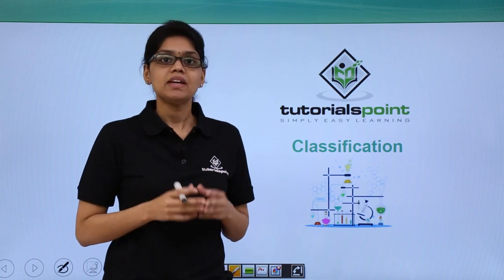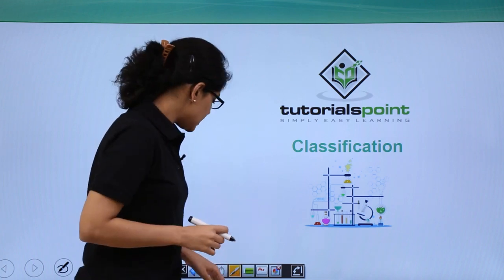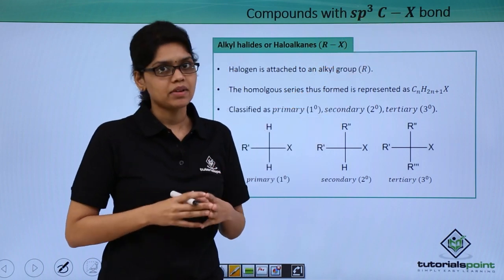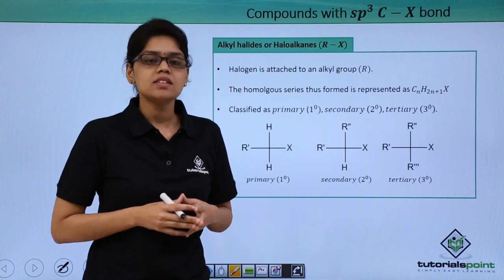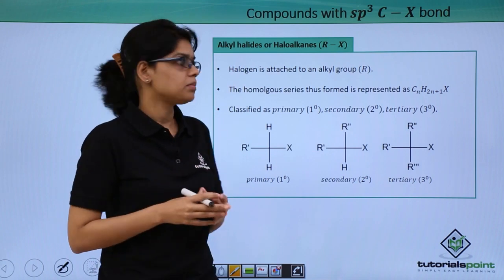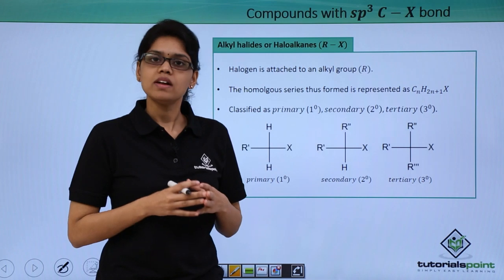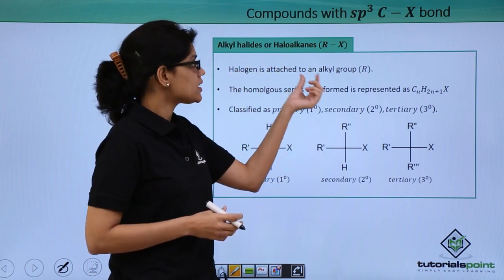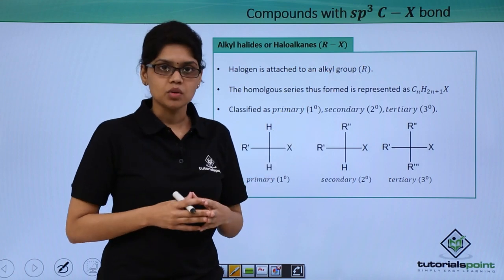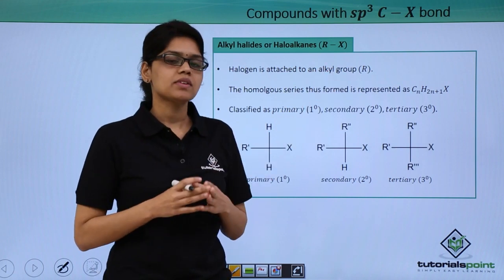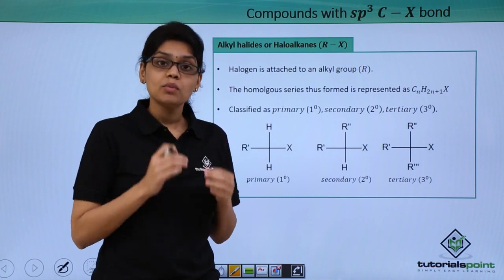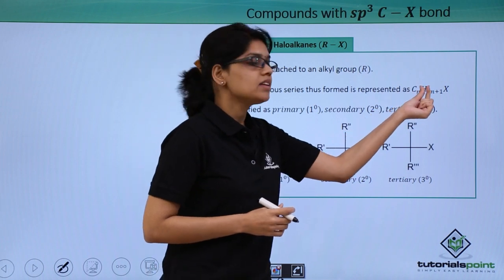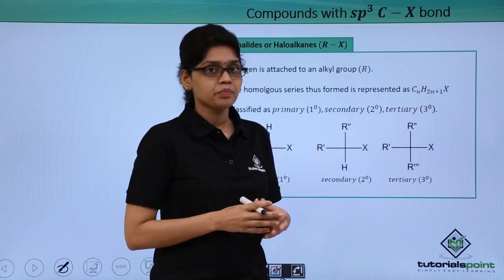The first classification will be sp³ C-X bond, that is the carbon atom to which the halogen atom is attached has sp³ hybridization state. Under this we will study three classes of compounds, the first one being alkyl halides or haloalkanes. In alkyl halides, halogen is attached to an alkyl group or R group where the hybridization state of the carbon atom is sp³. The homologous series of alkyl halides can be represented by the formula CnH₂ₙ₊₁X.